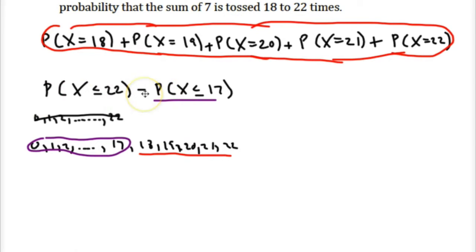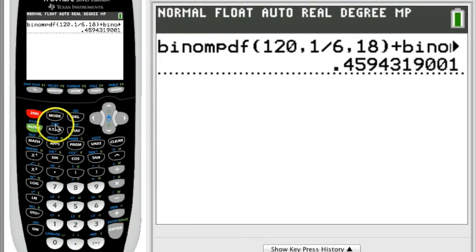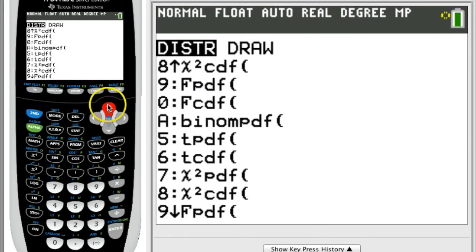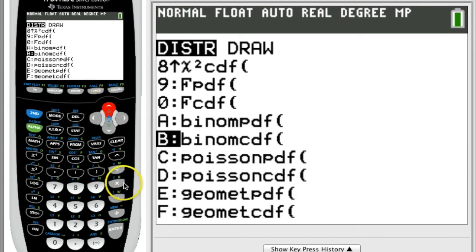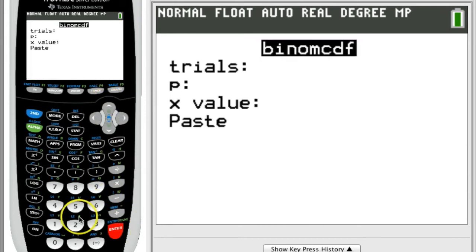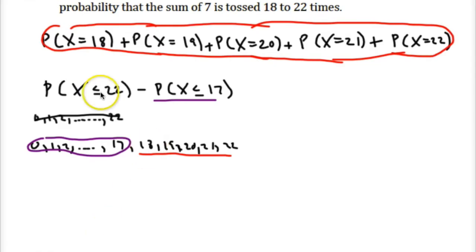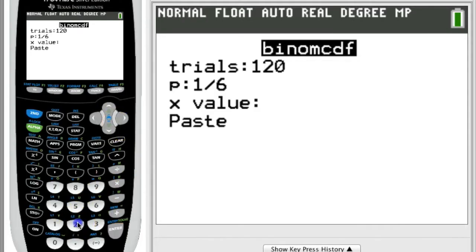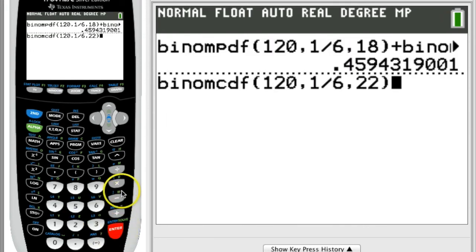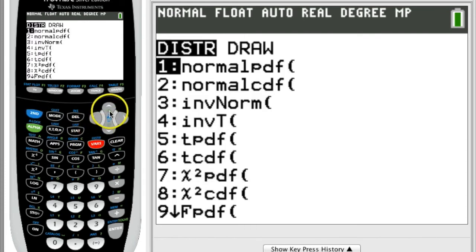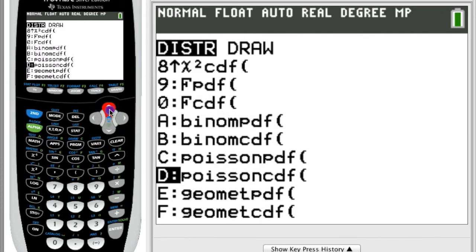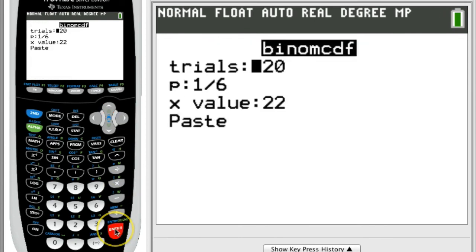Now, let's try it this way, which hopefully will speed things up. Second distribution. We want to go to this. The number of trials is 120. Your probability is 1 out of 6. Your calculator is wired so that it's less than or equal to, so 22. And then subtract. Let's do it again. Second distribution. To 17.